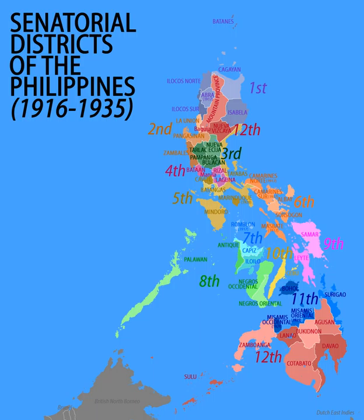The first eleven districts were composed of established provinces, while the twelfth was composed of the provinces of the Luzon interior and much of Mindanao, both of which were never fully administered by the old Spanish colonial government and designated by American authorities as non-Christian areas. The first to eleventh districts elected two senators each by popular vote. The two senators from the twelfth district were appointed by the U.S. Governor-General.